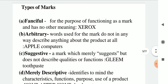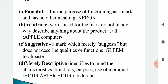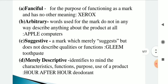The types of marks are: first, Fanciful — created for the purpose of functioning as a mark and has no other meaning, e.g. Xerox. Second, Arbitrary — words used for the mark that do not in any way describe anything about the product at all, e.g. Apple Computers. Third, Suggestive — a mark which merely suggests but does not describe qualities or functions, e.g. Gleam Toothpaste. And last, Merely Descriptive — identifies characteristics, function, purpose, and use of a product, e.g. a deodorant labeled 'hour after hour.'